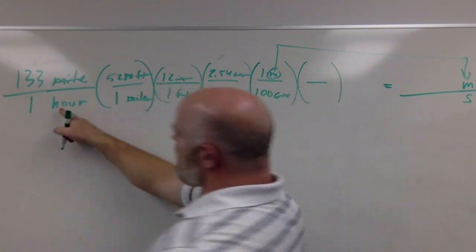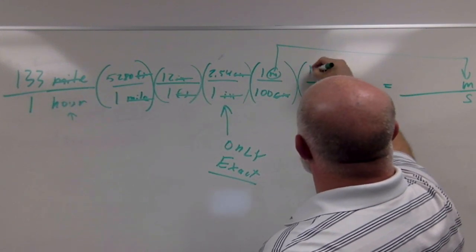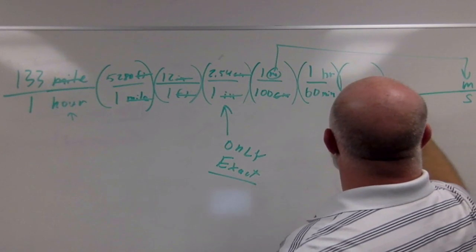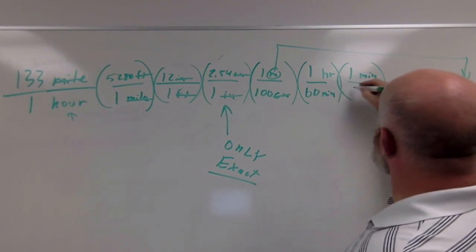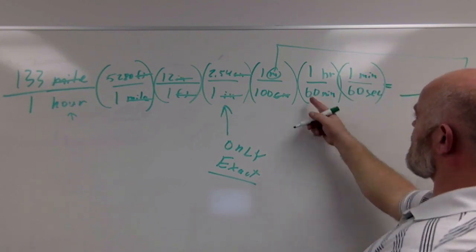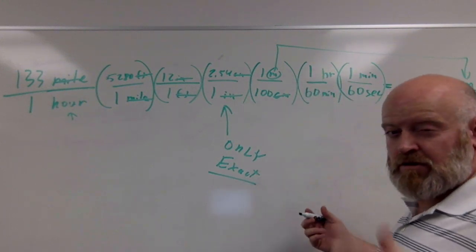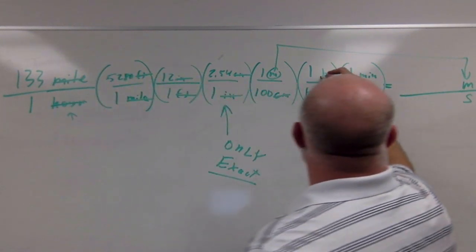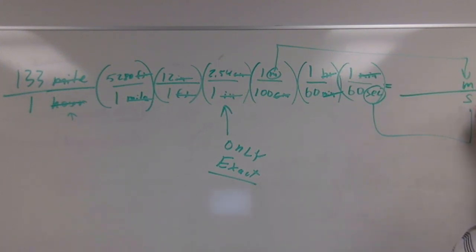Because hours are in the denominator, I'm going to put it up on the numerator now. For every one hour I know that there is 60 minutes. I have minutes in the denominator, I know that for every one minute I get 60 seconds. Now I could have done this in one step—I could have said one over 3,600 if I wanted—but this works well just the same. Now my hours have cancelled, my minutes have cancelled, I have seconds.